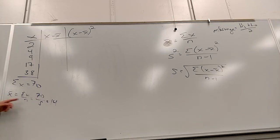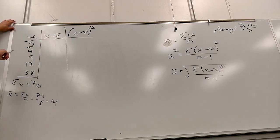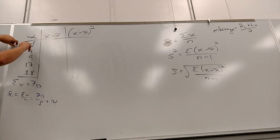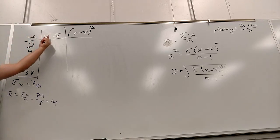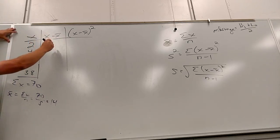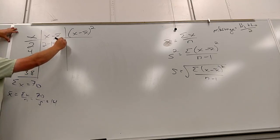Now you know the mean is 14. In this row, what is X? 2. And what does this say to do? Each X minus the mean. So it'll be 2 minus 14, which is negative 12.